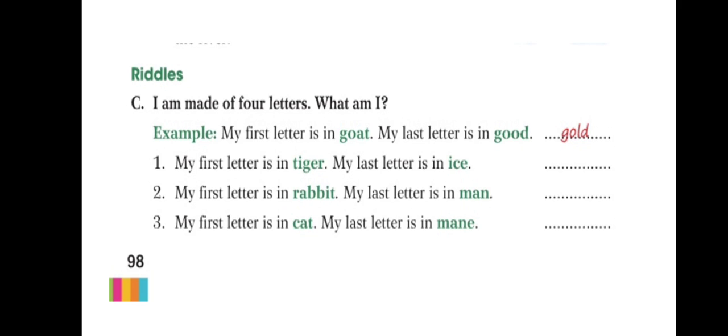Now, first one, my first letter is in tiger. My last letter is in ice. So, I have provided time. My first letter is in rabbit. My last letter is in man. Rain. I have given rain. So, it might be some different answer as well. It doesn't mean actually that the rain is only the correct answer.